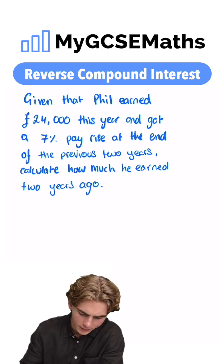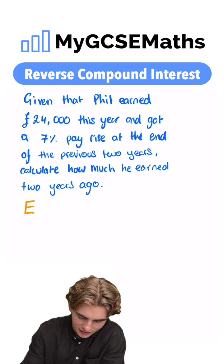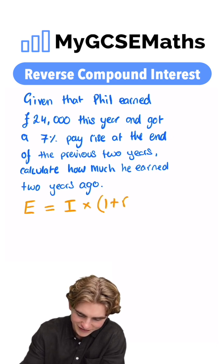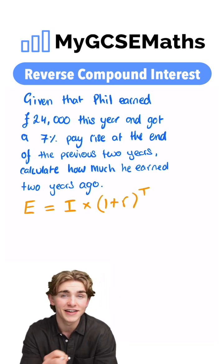Remember our compound interest formula tells us that our end amount is equal to our initial amount multiplied by one plus our interest rate as a decimal raised to the power of T where T is our number of time periods.